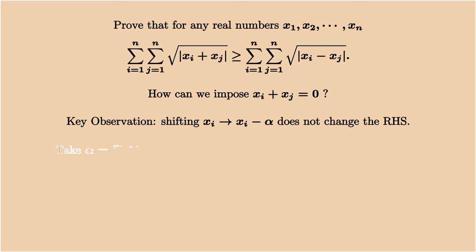For example, taking the average of x1 and x2 will make the first two elements sum up to 0. This is great!